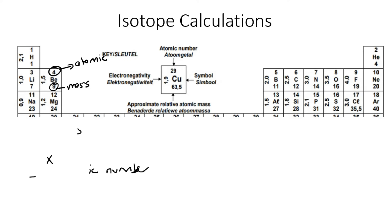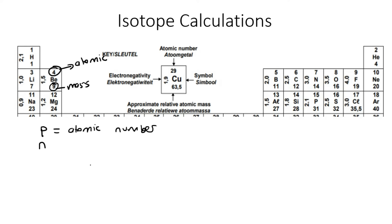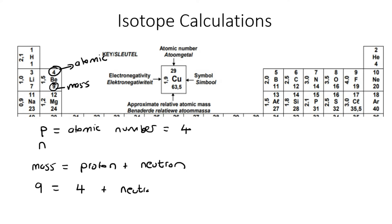For example, beryllium has a four and a nine. So if we look at how many protons and neutrons it has, we know that protons equal the atomic number, so it has four protons. The mass is equal to protons plus neutrons, so the mass is nine. The number of protons is four, so the number of neutrons would be nine minus four, which equals five.